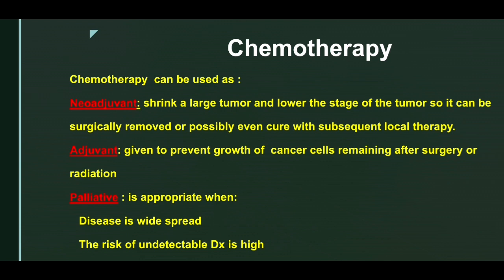A patient may have metastasis from the start — called de novo metastasis — with multiple site involvement of malignant disease rather than localized disease. Such a patient is treated with palliative chemotherapy. The patient may also have carcinoma of unknown primary origin where the source is not known. Palliative treatment is also used for disease that cannot be resected or is resistant to radiation.